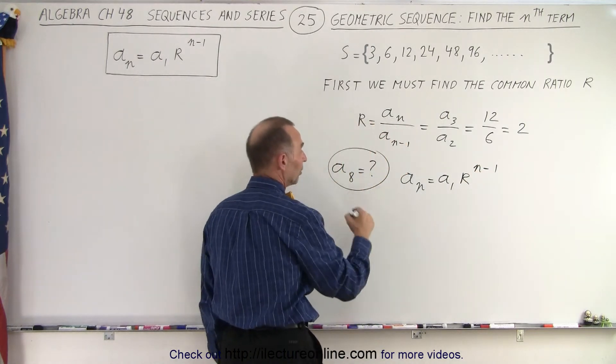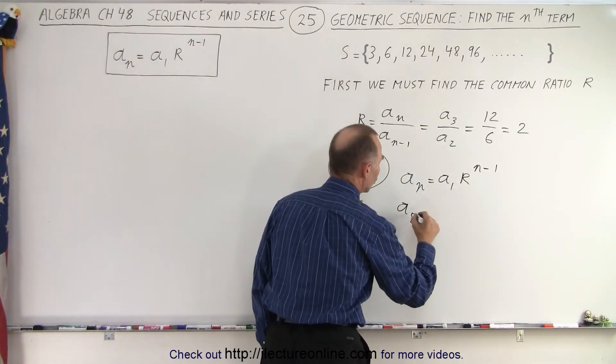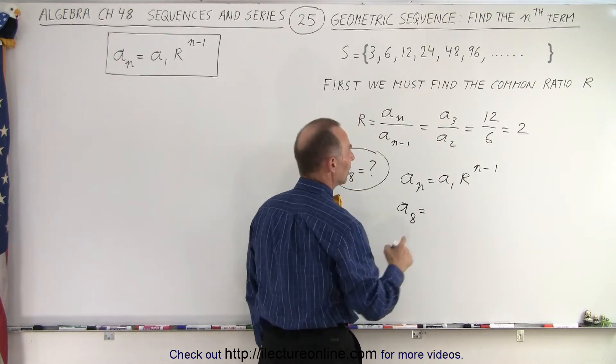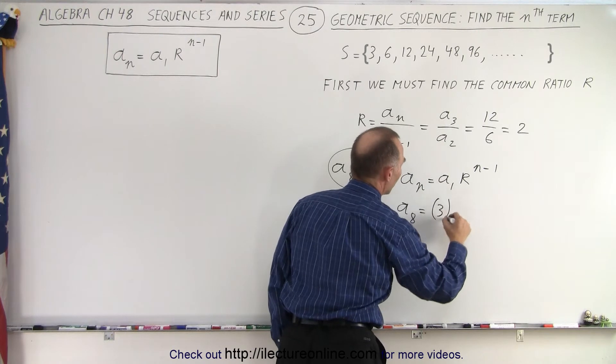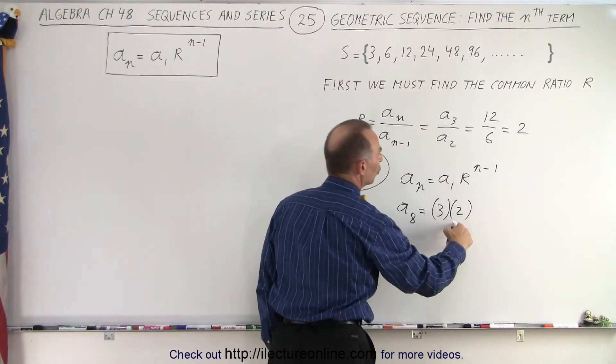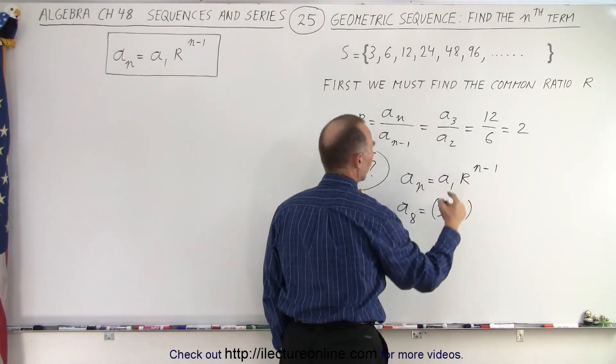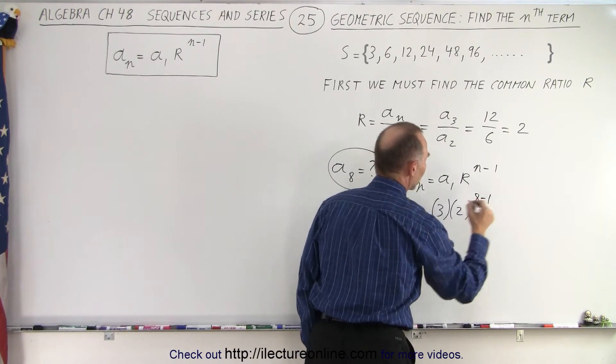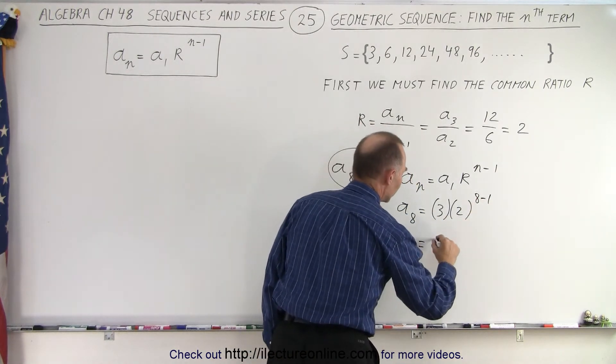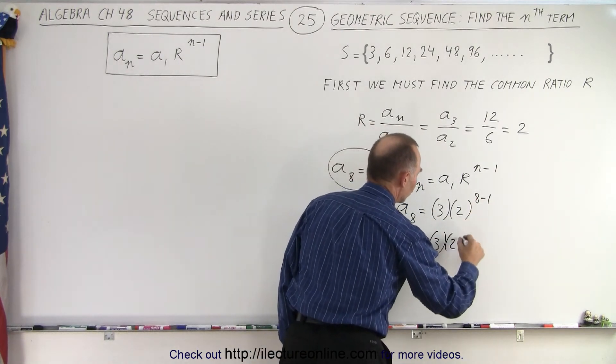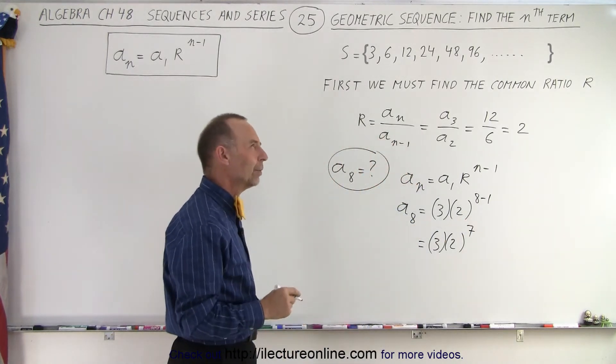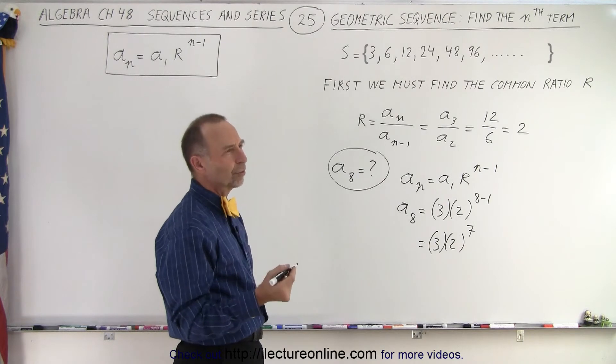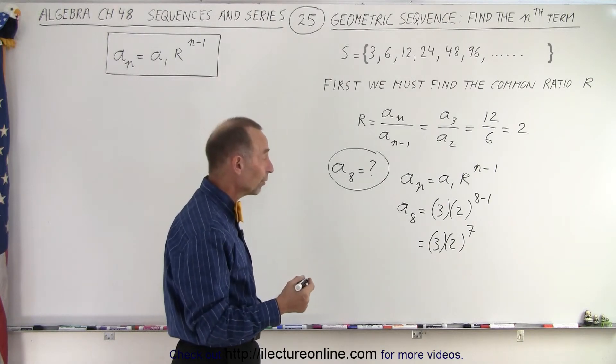So now we plug in what these are. The 8th term in the sequence is equal to a sub 1, which in this case is 3, multiplied times the common ratio 2 raised to the 8 minus 1 power. So this is equal to 3 times 2 to the 7th power. And what is 2 to the 7th power? Let's see here. 2 to the 6th power is 64. 2 to the 7th power is 128.